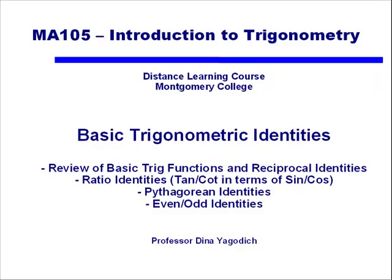In this video we're going to go over some of the basic trigonometric identities, and we'll be using these when we start manipulating trig functions algebraically. We'll first review our basic trig functions and go over our reciprocal identities. Then we'll talk about ratio identities — putting tangent and cotangent in terms of sine and cosine — followed by Pythagorean identities, and lastly the even and odd identities.